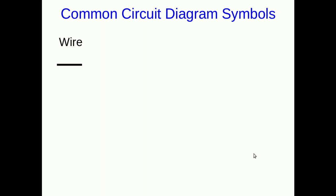We need to be able to draw circuits if we're going to talk about them, and we want to be able to draw them pretty quickly, so we're going to use schematic diagrams. The first symbol we need is for a wire, and it's just a line — that doesn't necessarily represent a real physical wire. It's just any good conductor that connects two pieces of the circuit together.